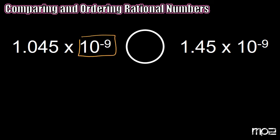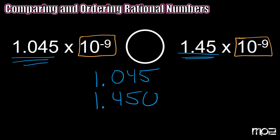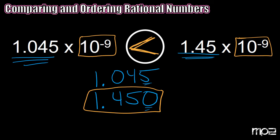Our first step is to compare our powers of 10, and we notice that they are both exactly the same. So our next step is to compare the rational numbers. I'm going to line up the decimal points and make sure they both end in the same place value — thousandths. So I have 1 and 45 thousandths versus 1 and 450 thousandths. Obviously 450 thousandths is much bigger, so the number on the right hand side is bigger. I'll show that with the less than sign.